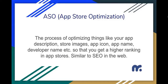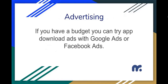ASO — App Store Optimization — is the process of optimizing things like your app description, images, app icon, developer name, and app name. When you do all these, your app ranks higher in app stores like the Apple App Store or the Google Play Store. It's quite similar to SEO on the web.